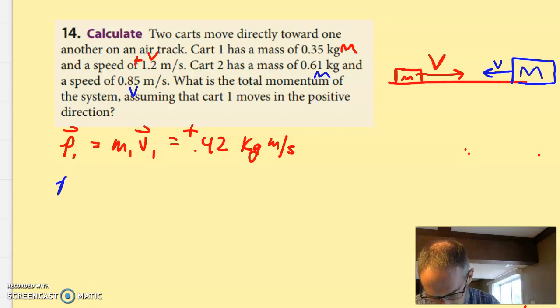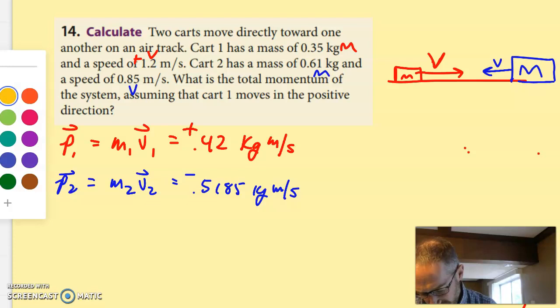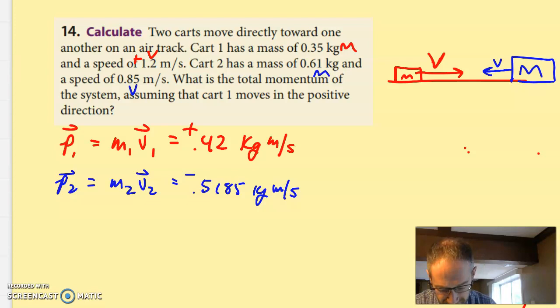That velocity was in the positive direction, so that means this momentum is in the positive direction as well. Similar kind of thing for momentum two, that's mass two, velocity two multiplied together, and when you do that, you get 0.5185 kilogram meters per second. Since that's moving in the other direction from the positive direction, it's negative. Now, it's pretty clear that the negative one is larger than the positive one, so whenever you add the system together, the sum of the momentum is the sum total of those two. It's an addition problem, but since one's negative, it's really like a subtraction problem, and you're getting 0.0985 kilogram meters per second, and that is a negative.